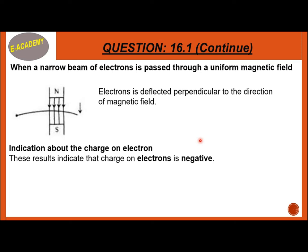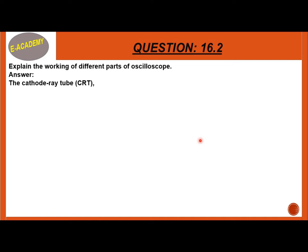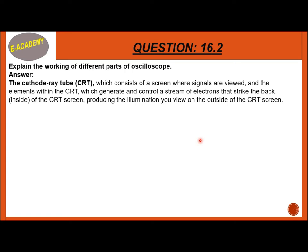Explain the working of different parts of the oscilloscope. The cathode ray tube consists of a screen where signals are viewed, and the elements within the CRT generate and control a stream of electrons that strike the back inside of the CRT screen, producing the illumination viewed on the outside of the CRT screen.